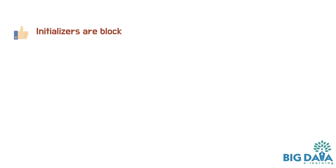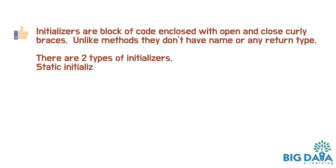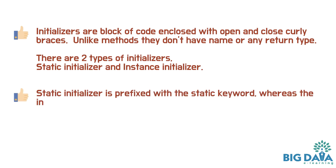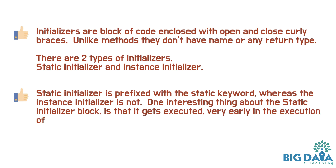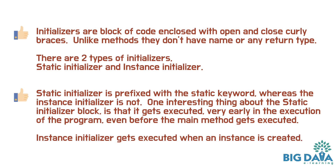Initializers are blocks of code enclosed with open and close curly braces. Unlike methods, they don't have a name or any return type. There are two types of initializers: Static Initializer and Instance Initializer. Static Initializer is prefixed with the static keyword, whereas Instance Initializer is not. The Static Initializer block gets executed very early in the execution of the program, even before the main method gets executed. Instance Initializer gets executed when an instance is created.